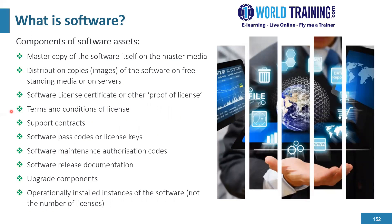Software assets have various components from a SAM perspective. They include the master copy of the software itself on the master media, distribution copies known as images of the software on freestanding media or on servers or systems, the proof of license known as the software license certificate, the terms and conditions of the license which has been purchased, and the support contract itself for the software — which is separate from the terms and conditions of usage, but will usually all be in a single contract.